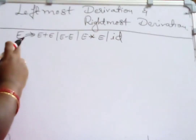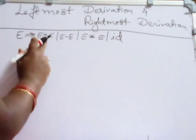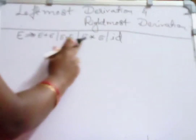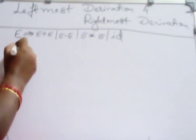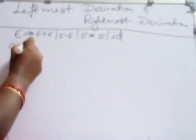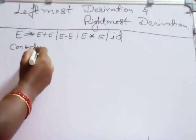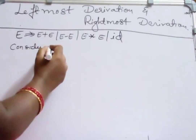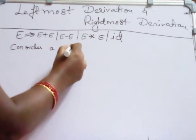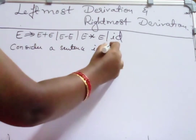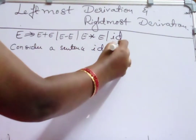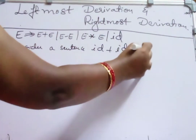E is a non-terminal having 4 productions: R1, R2, R3, and R4. Now consider a sentence to show the leftmost derivation — the sentence ID plus ID star ID.